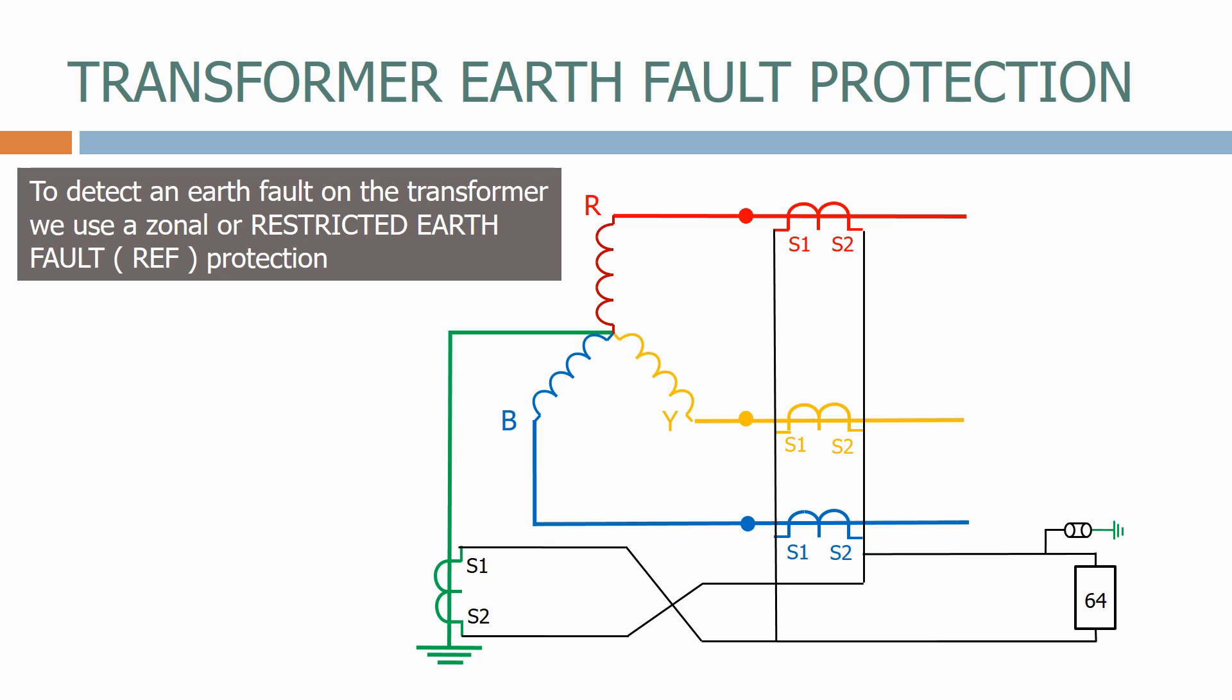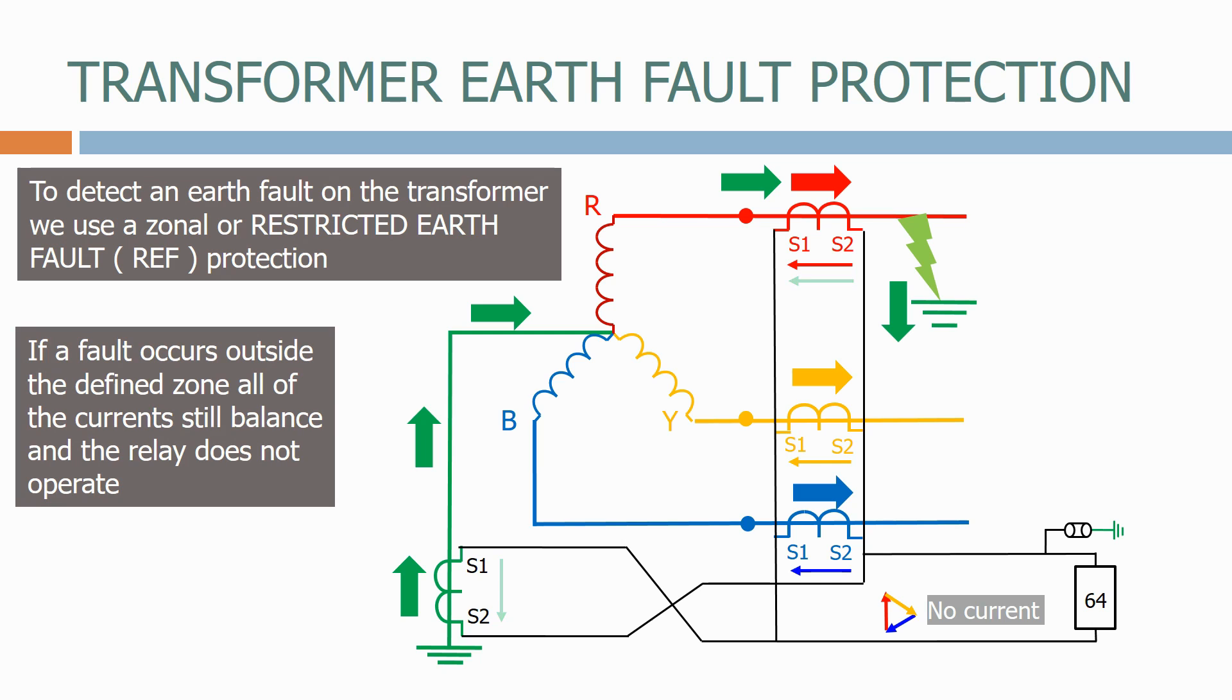Let's now energize the transformer. Let's now apply a fault on the red phase outside the zone and see what happens. As expected, we now get additional earth fault current on the red phase. This is now balanced by the current detected by the CT on the ground connection. If a fault occurs outside the defined zone, all of the currents still balance and the relay does not operate.